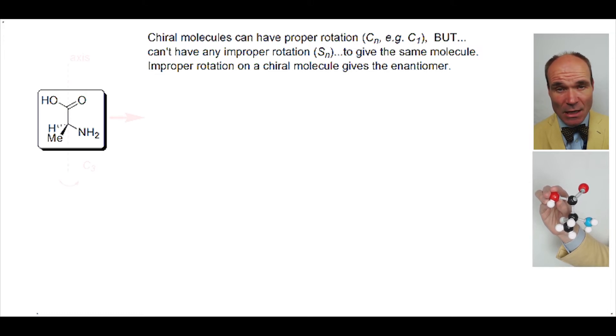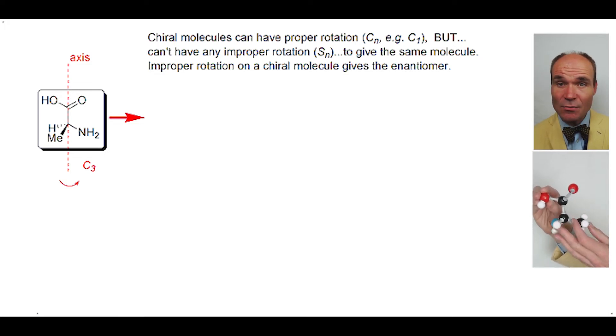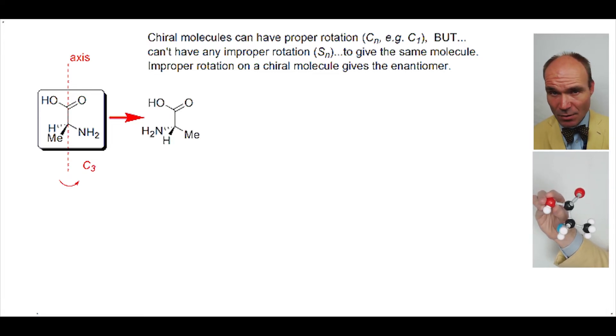First, we will carry out a proper rotation about the carboxylic acid carbon and the amine-carbon bond axis, C3, so 360 divided by 3 equals 120 degrees. So we have a different conformer of the same molecule.